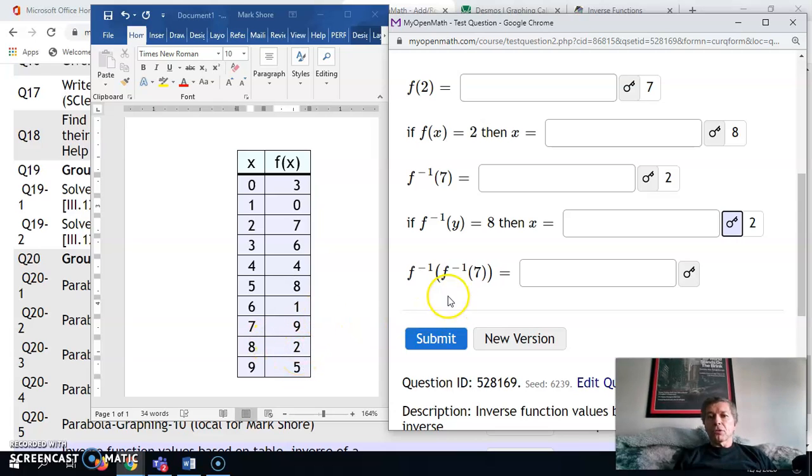Let's do the last one. You do this from the inside out. f inverse of 7 means we're going from right to left, and we're actually given the value of 7 that we're looking for on the right-hand side. So if we do f inverse of 7, we end up with 2. Now we need to get f inverse of 2. Start with the 2 over here, and that takes you to 8. So the answer to this is 8.